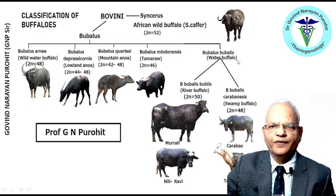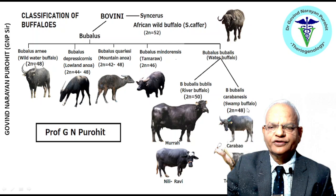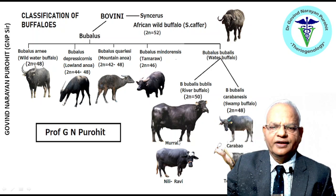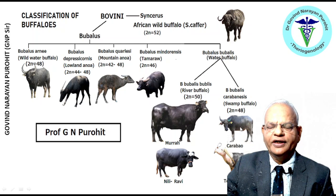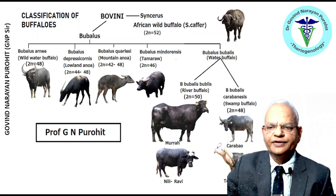Bubalus bubalis is the water buffalo inhabiting many parts of the world and has two subtypes: the river buffalo Bubalus bubalis bubalis with chromosome number 50, and the swamp buffalo Bubalus bubalis carabanesis with chromosome number 48. Breeds such as Murrah, Nili-Ravi, and many others of the river buffalo inhabit many parts of the world. The swamp buffalo is a work animal found in Southeast Asia. The Karabao and the Dedong Bonga are popular in Sulawesi and Malaysia, known for their black and white coloring.